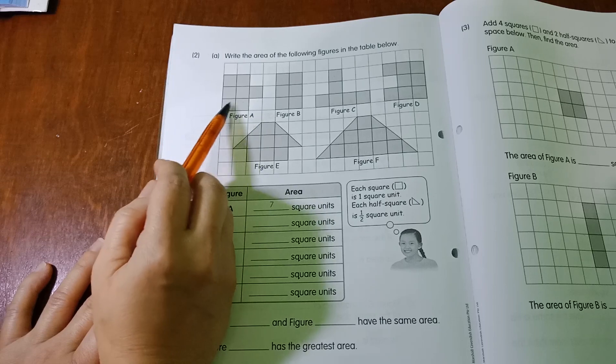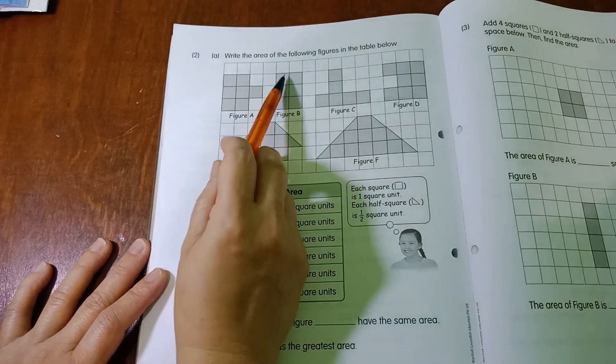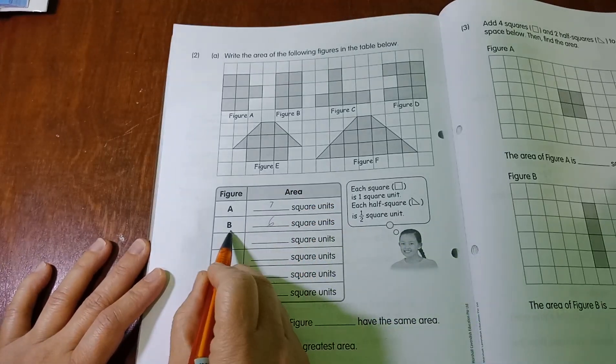1, 2, 3, 4, 5, 6, 7. Check mark. What about number B? 1, 2, 3, 4, 5, 6, so you write 6 square units for B.